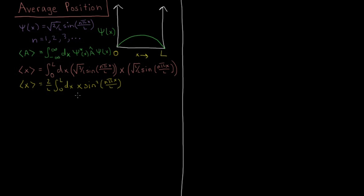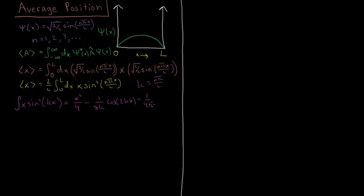This is a somewhat involved integral relative to very simple standards, so we are going to look something up in a table. The integral of X sine squared KX — where K is N pi over L — according to integral tables is equal to X squared over 4, minus 1 over 8K times cosine of 2KX, minus 1 over 4K times X sine of 2KX. We're going to be evaluating this from 0 to L.